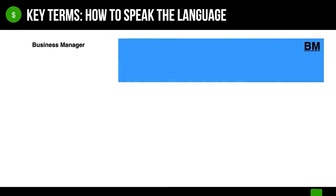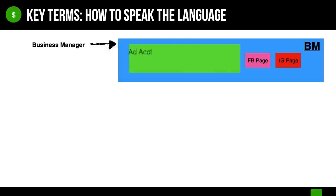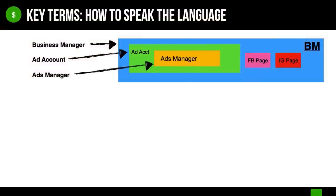First, you've got your Business Manager — your master account that holds everything. Inside your Business Manager you've got your Facebook page, your Instagram page, and your ad account. Inside your ad account is your Ads Manager, which you use to manage your ads. Your Ads Manager is made up of three levels: Campaign, Ad Set, and Ad. Make sure you know these three. When you land inside your Ads Manager, you land at level one — the campaign level. I like to think of it like a person with a head, a body, and legs.